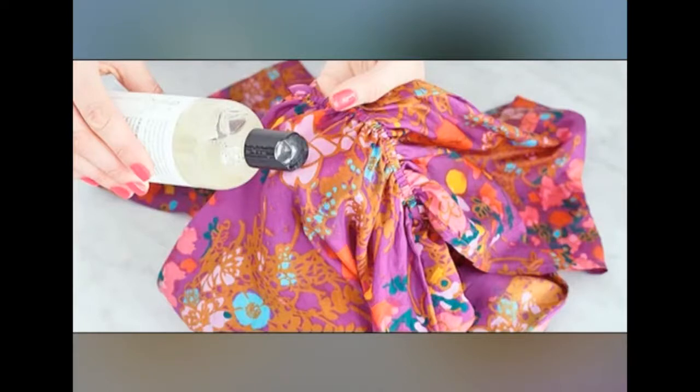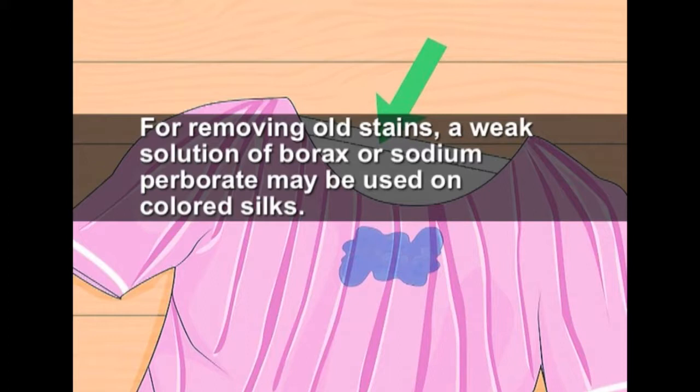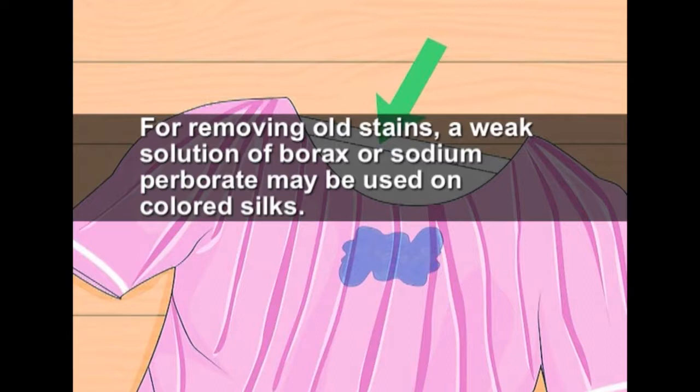The silk fabrics should be prepared for laundering by mending all the holes and tears and removing metal buttons if any. Stains if any must be removed using mild detergent solution in warm water, which will be effective on fresh stains. For removing old stains, a weak solution of borax or sodium perborate may be used on colored silks. For white silks, hydrogen peroxide with a few drops of ammonia will be effective. Steeping may not be required for silks as its smooth surface will not hold much dust. However, heavily soiled silk may be soaked in warm water with a little borax.